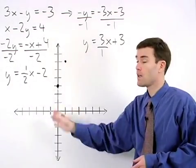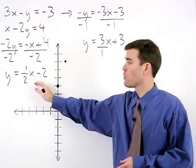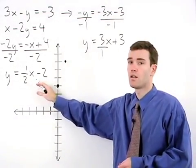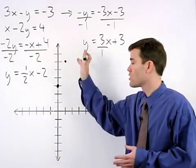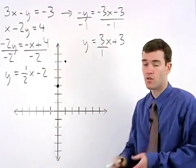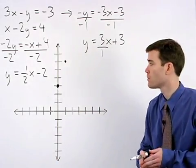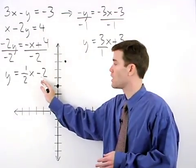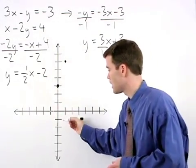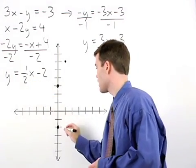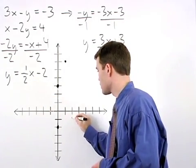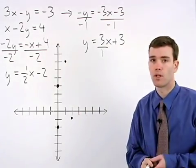Before graphing this line however, let's plot a couple points on our second line so that we can determine the general neighborhood of where our two lines are going to intersect before we actually draw them. For our second equation, the y intercept is negative 2 and our slope is 1 half so we go up 1 and to the right 2 to plot a second point.